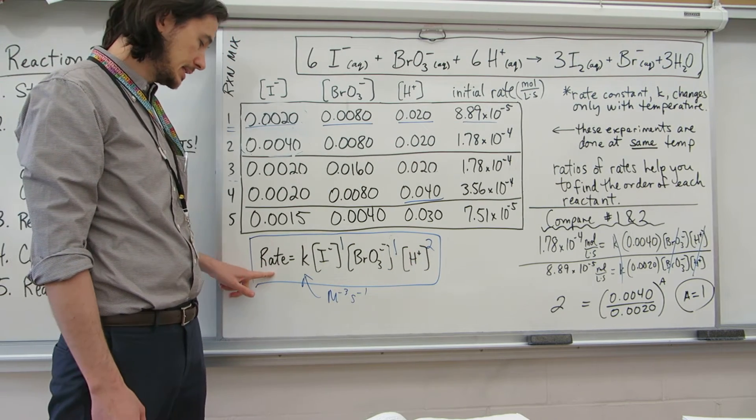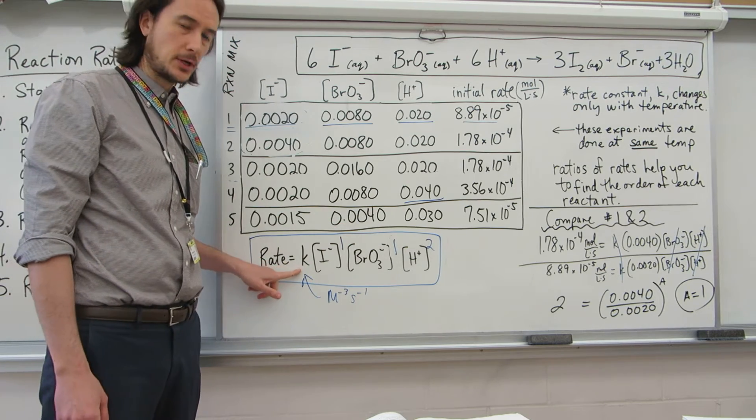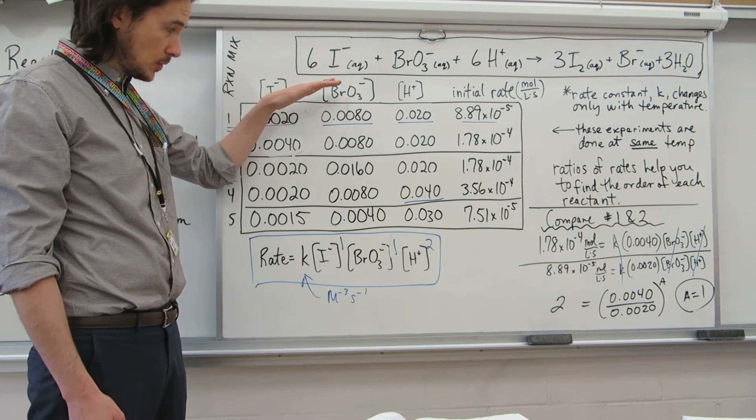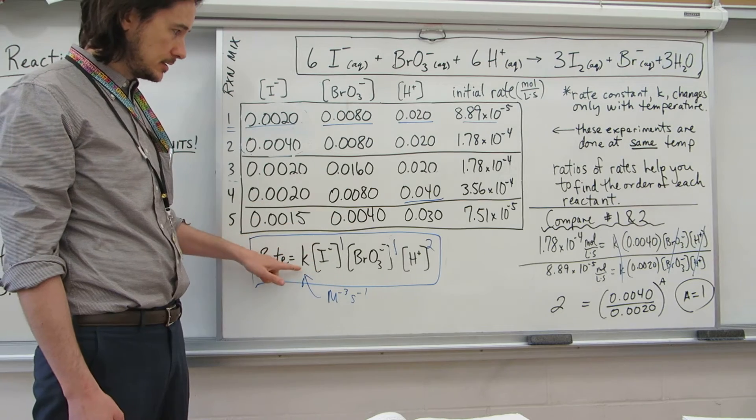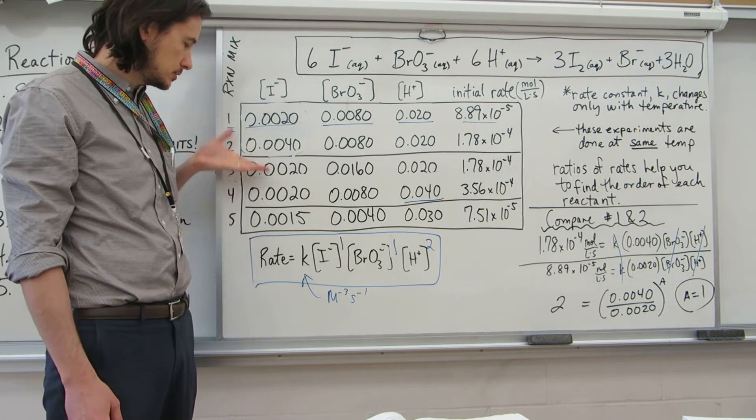8.89 times 10 to the negative 5th of the rate, and then we solve for K. Any of these that you plug in will give you the same K, so you could do any of those.